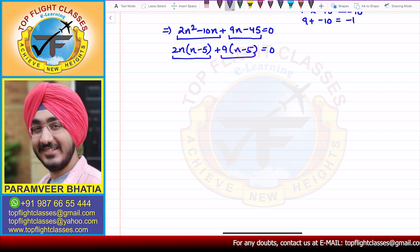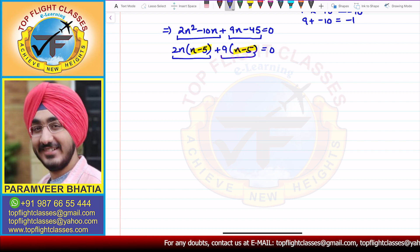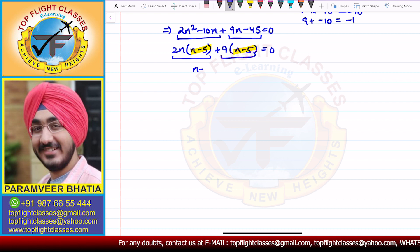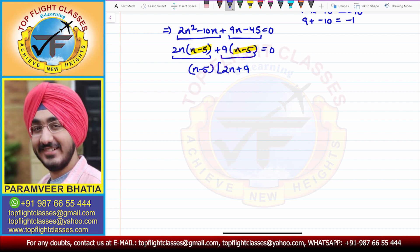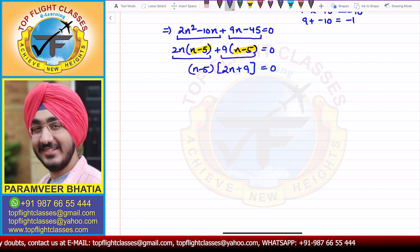We can clearly see that (N minus 5) is common. Taking it out: (N minus 5)(2N plus 9) = 0.